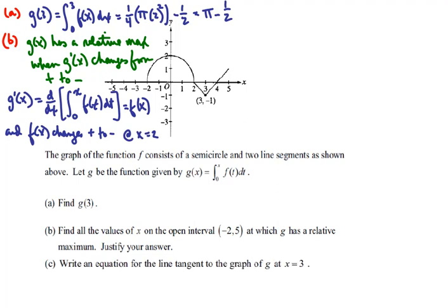In part c, we want to write an equation for the line tangent to the graph of g at x equals 3. So for this we need two things. We need g prime of 3, and that will be the slope of the tangent line. And we need g of 3. We've already shown that g of 3 is equal to pi minus 1 half.